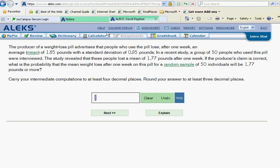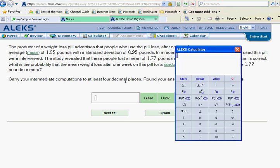On the ALEKS calculator, we're going to take 1.77 minus 1.85, now highlight that entire amount and hit the divide button—that'll put that first line in there for you.